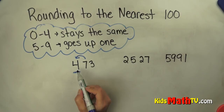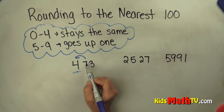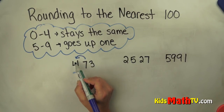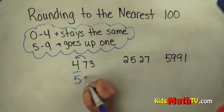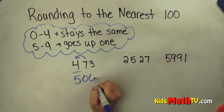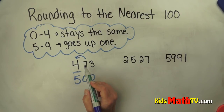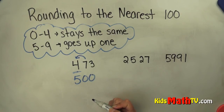So first we identify the hundreds place, and the number to the right tells that number what to do. This seven tells this four to go up one, so this rounds to five hundred. Four hundred seventy-three is closer to five hundred than it is to four hundred.